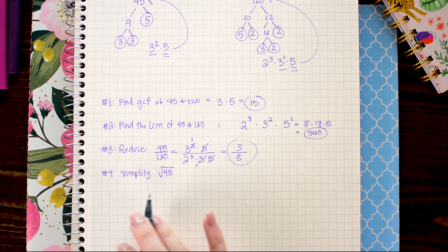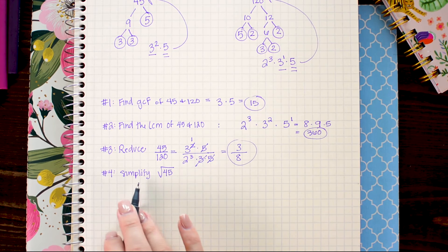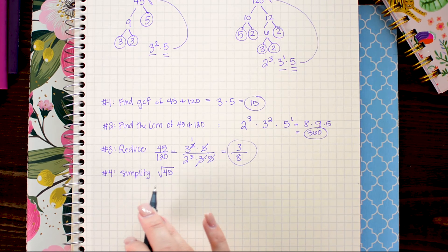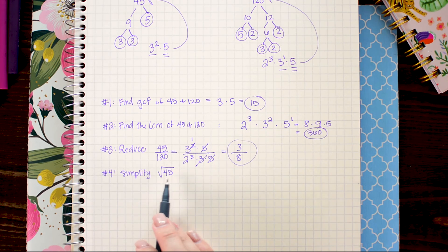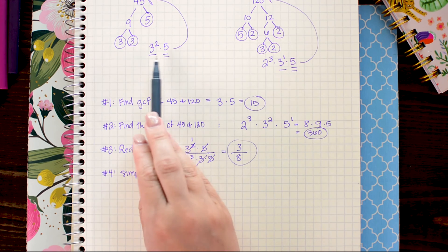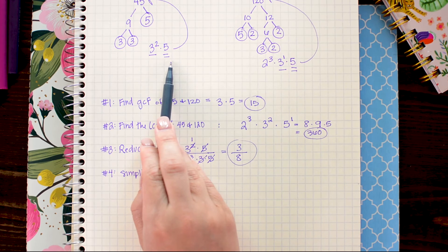Another thing that we can do with prime factorizations is we can use it to help us simplify square roots. So what I'm gonna do here is I'm just gonna go ahead and replace 45 with its prime factorization of 3 squared times 5.